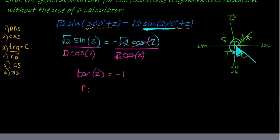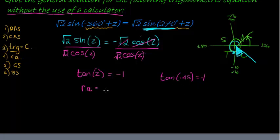From here the reference angle we have to do without the use of a calculator. Tan of 45 would have given me 1. So tan of negative 45 gives me negative 1. So my reference angle is negative 45.